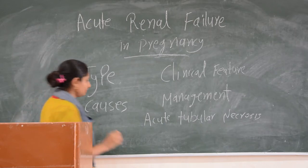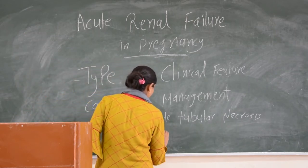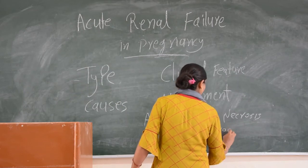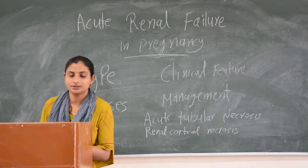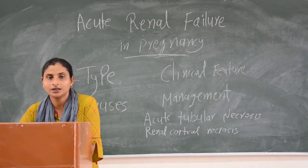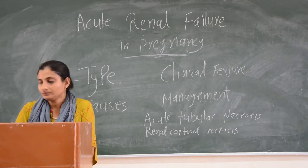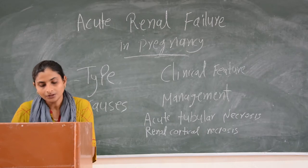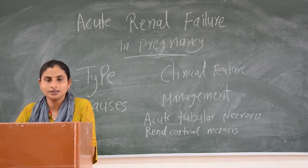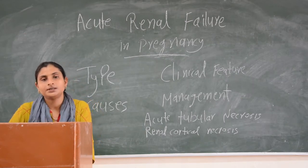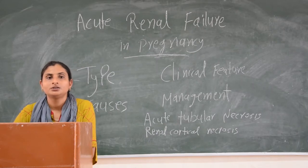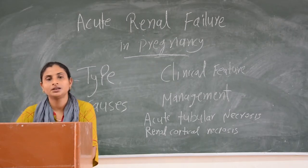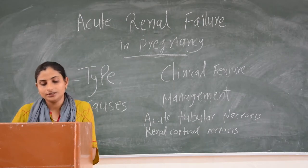The second type is renal cortical necrosis. Bilateral renal cortical necrosis can occur. This is an irreversible condition with high mortality. It arises from obstetrical causes where blood supply to the renal cortex is cut off, causing necrosis.